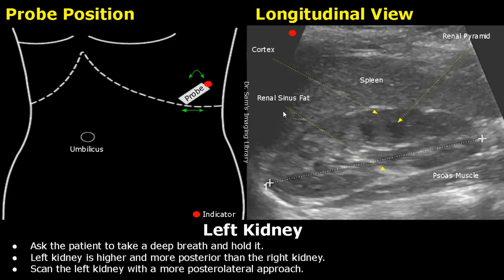We will get this type of image. The spleen can be used as a window to scan the left kidney — we can see the renal pyramids more clearly in this image. The psoas muscle is also seen here.